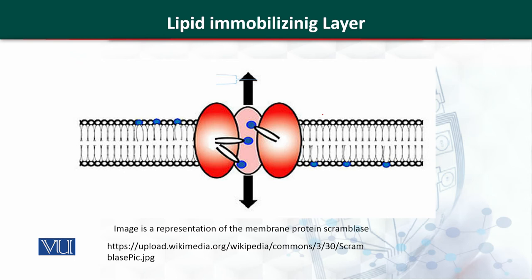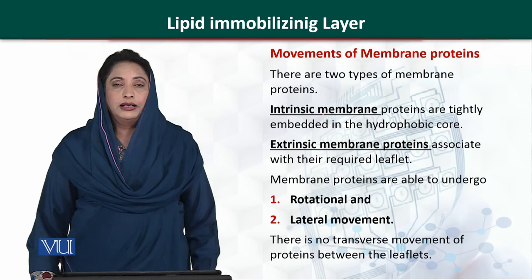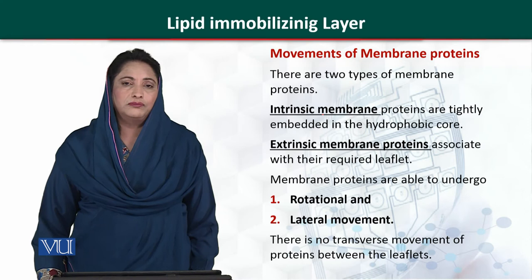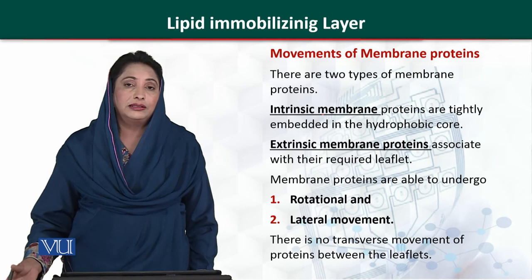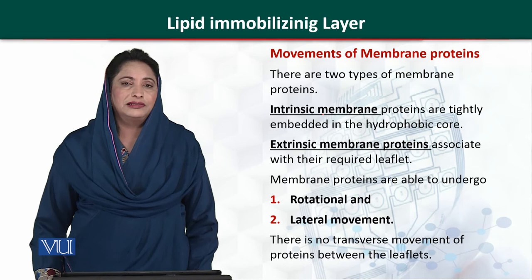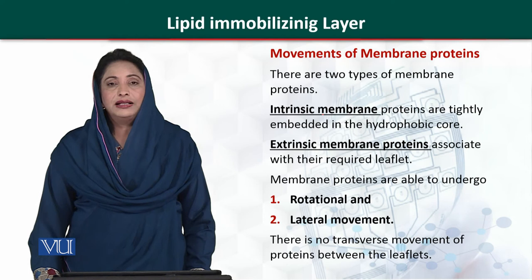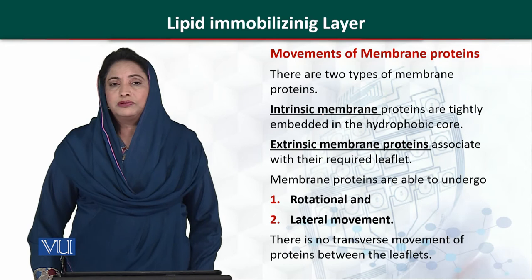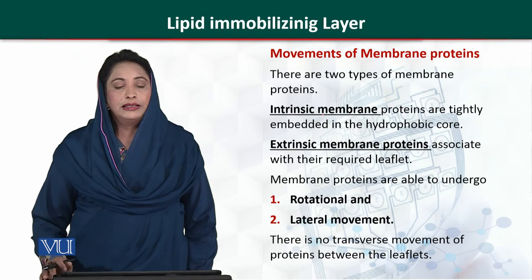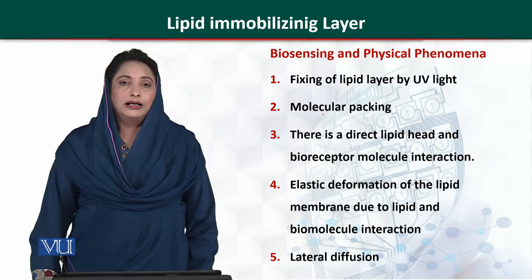The phosphate heads are shown in blue, and the enzyme can flip the molecule in the other direction. Regarding proteins in membranes, there are two types: intrinsic proteins, which are embedded in the layer, and extrinsic proteins, which are attached on the surface of the layer. There are two types of movements for proteins: rotational movement and lateral movement. There is no transverse movement for proteins.